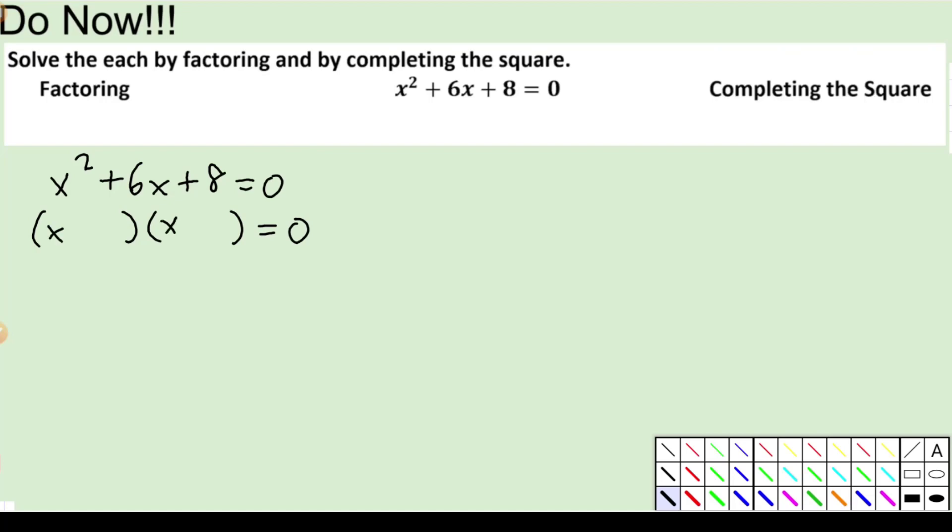That's going to be x times x to give me the x squared term. To get the 8, we got 4 and 2, and we have 8 and 1, but we need to make 6, so I know it's going to be 4 and 2. And I know this will have to be a positive and a positive. Use the zero product property. So, x plus 4 equals 0.